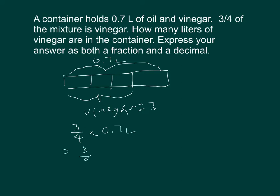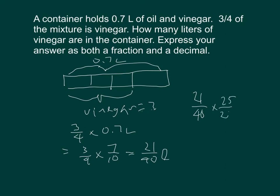That's three-quarters times seven-tenths, which equals 21-fortieths liters. To convert to a decimal, we multiply by 25 over 25 to get thousandths. Twenty-one times twenty-five is equal to 525.